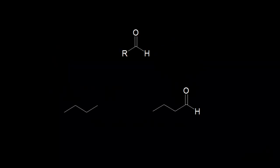Let's look at how to name aldehydes and ketones. Let's start with an aldehyde. Just to refresh your memory about how to recognize an aldehyde, there's a carbonyl present — a carbon double bonded to an oxygen — and there's an alkyl group on one side and a hydrogen on the other side. If we wanted to name this extremely simple molecule over here on the left, we know there are a total of four carbons and it's an alkane, so we would call this butane.